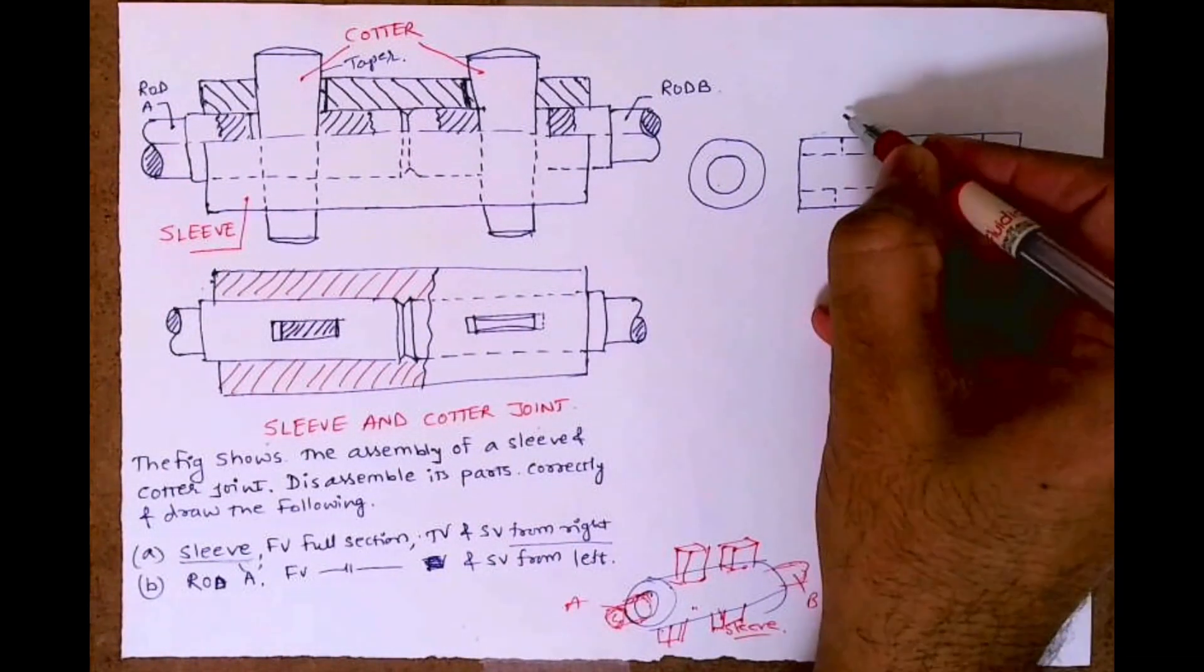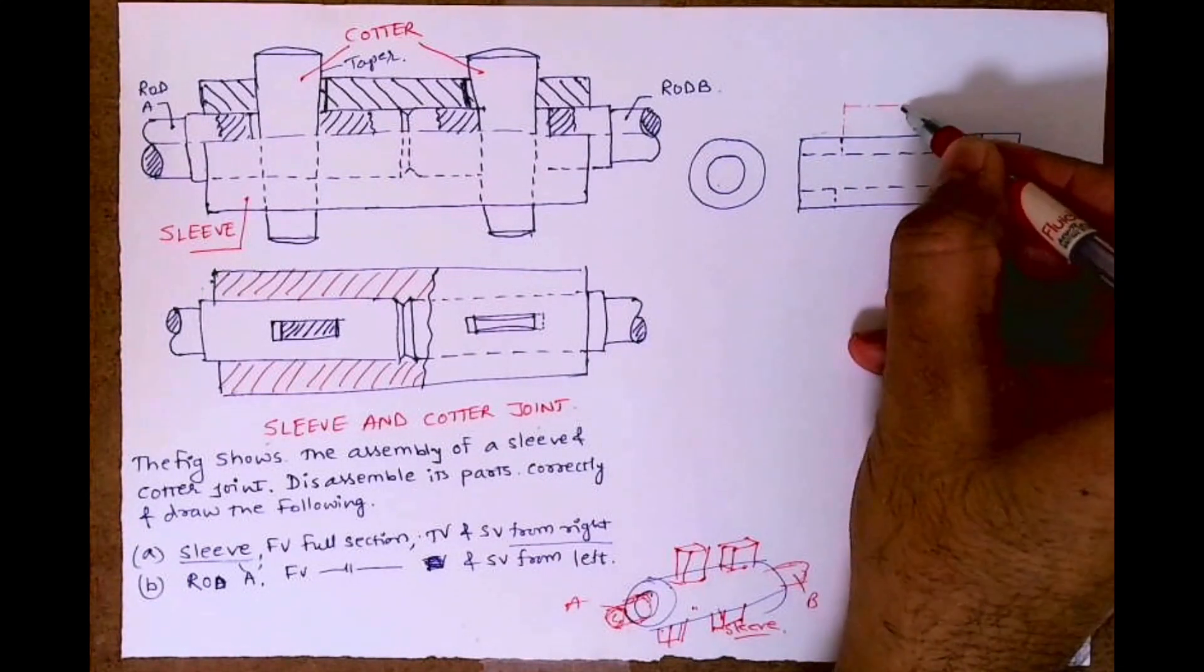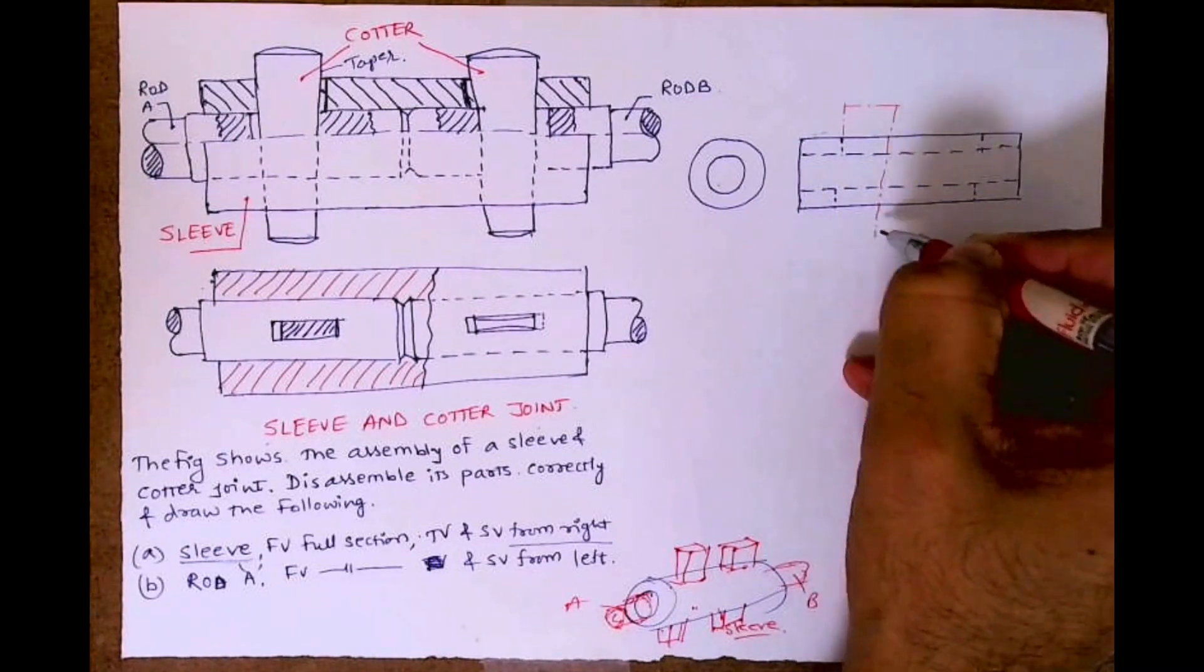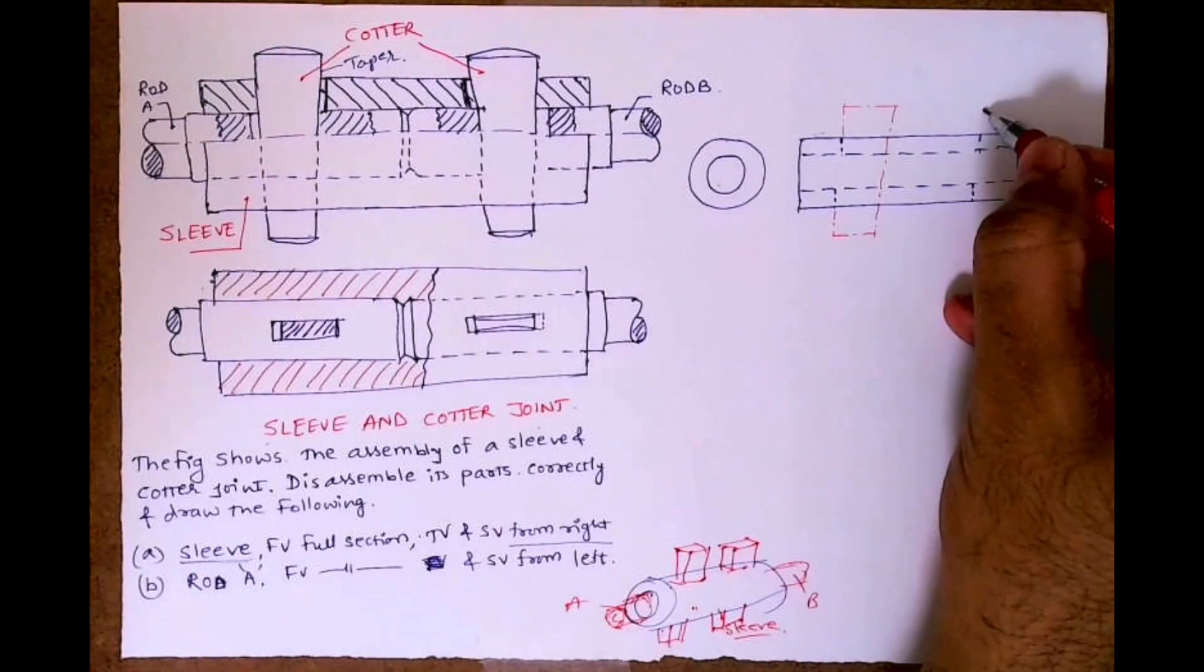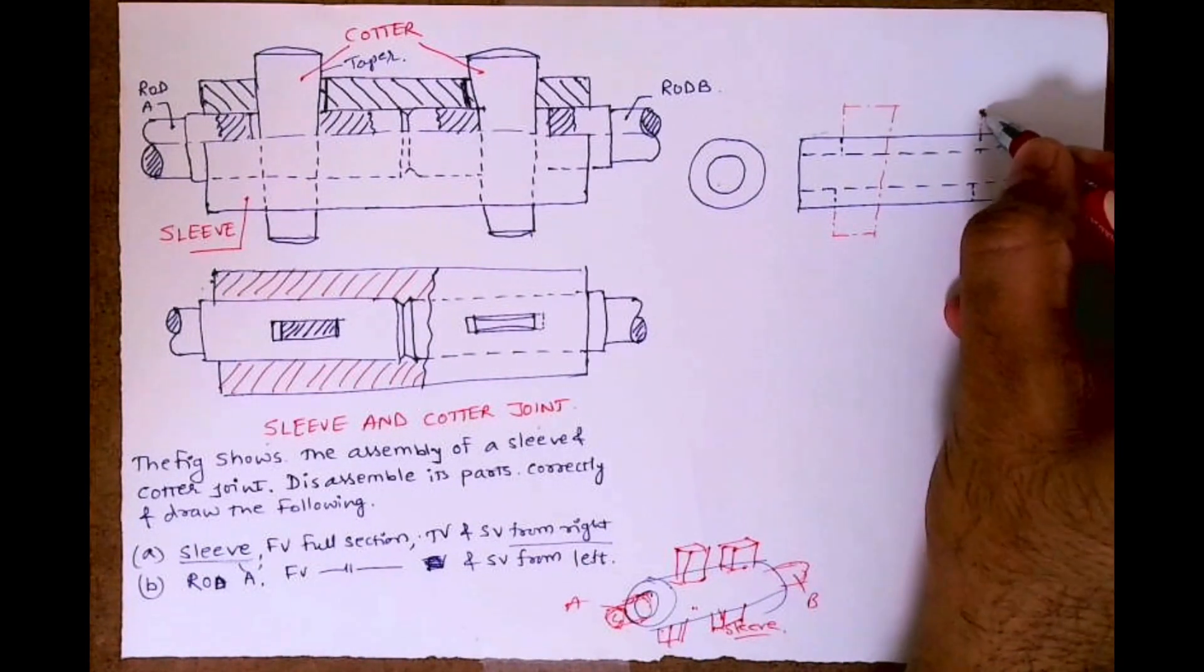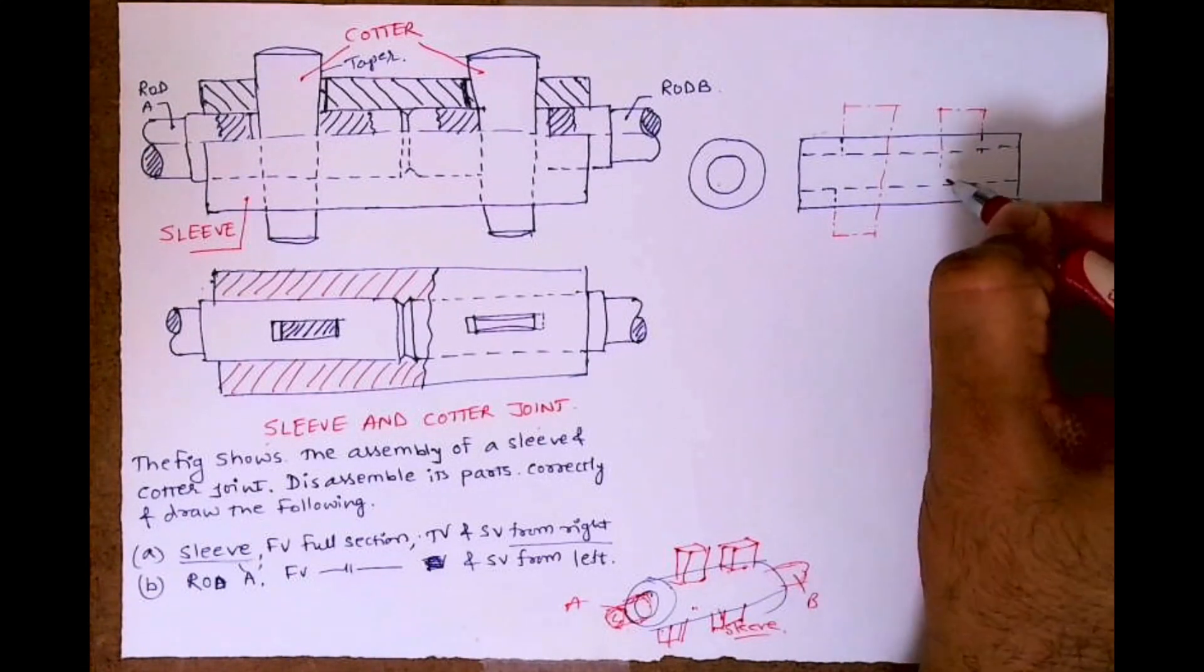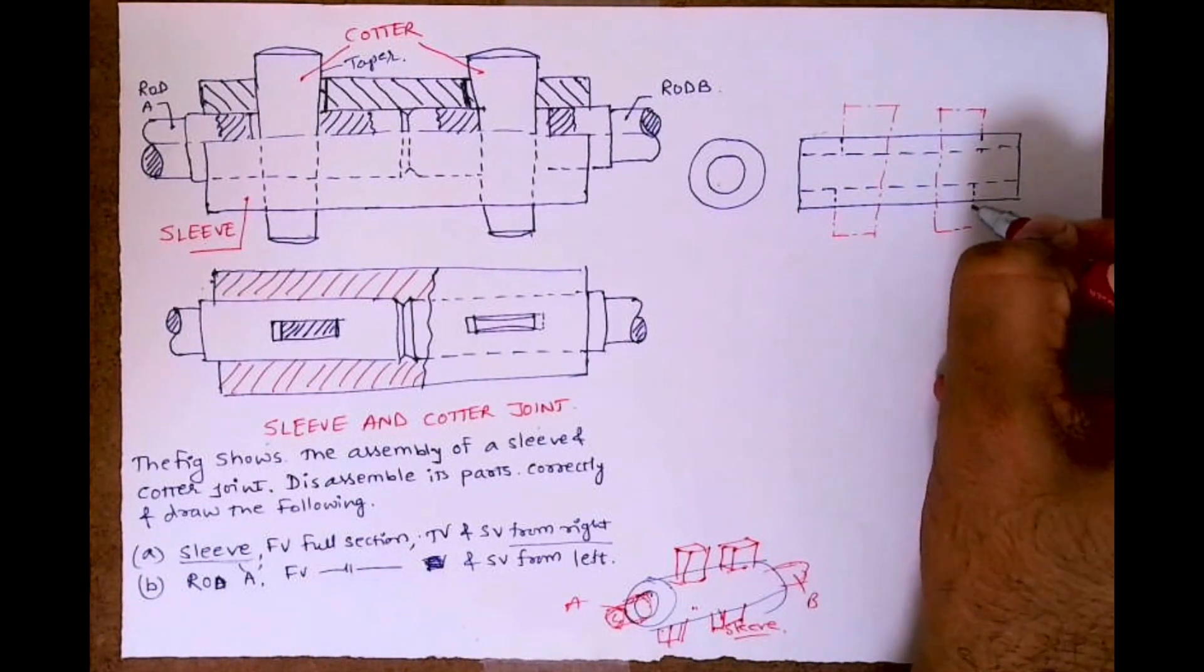We need to draw cotter over here, but we will draw cotter like this very light, only for reference. That's why I'm drawing it in axis line. See, on both the sides I will draw very light cotter.